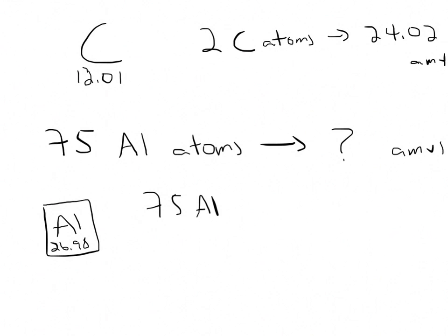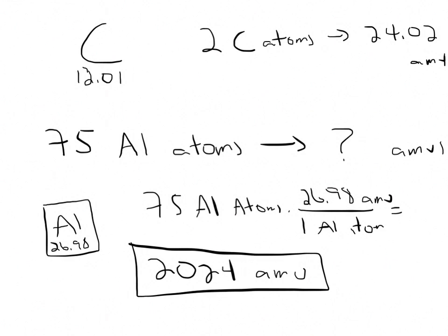And we now know that one aluminum atom is 26.98 amu. So we get for the aluminum that 75 aluminum atoms would be 2,024 amu. And if we wanted to convert that to grams, we would just multiply that by the number of grams at 1 amu, which is 1.66 times 10 to the negative 24 grams. And that would give us the answer in grams.